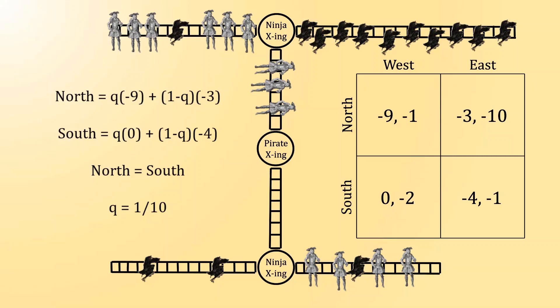In other words, the ninja is going to be playing west 10% of the time, and east 90% of the time. That should be surprising. After all, the north-east outcome is absolutely disastrous to the ninja, and the ninja is opening himself up to that possibility by choosing east 90% of the time.